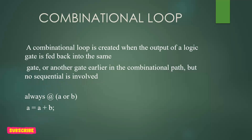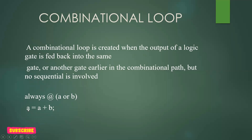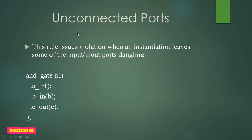Next comes the combinational loop. A combinational loop is created when the output of a logic gate is fed back to the same gate — or another gate earlier in the combinational block — without any sequential element involved. For example: always @(a or b), where a = a + b. Here a is added with b and assigned back to a, forming a combinational loop. Combinational loops are not allowed and this is one of the key checks in lint.